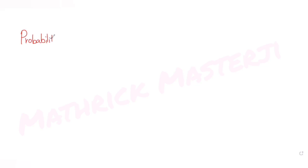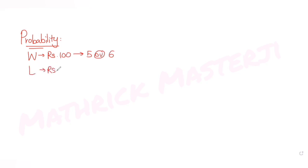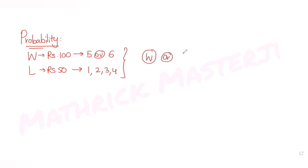Hi guys, I hope you are all doing well. Today's question is from the topic of probability. The question tells us that a man wins 100 rupees if he gets five or six when he throws a die, and he loses 50 rupees if he gets any other number — that is, one, two, three, or four. He decides to throw the die either till he gets a five or six, or to a maximum of three throws.